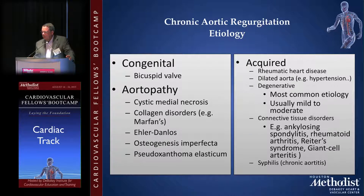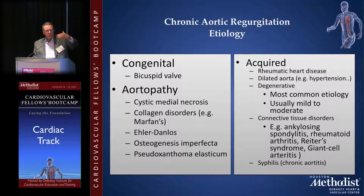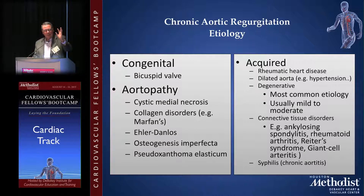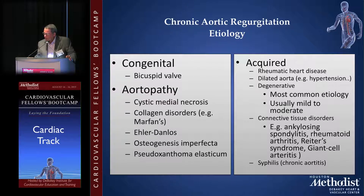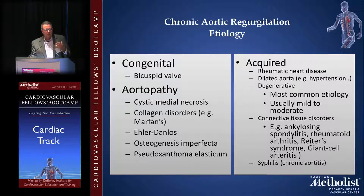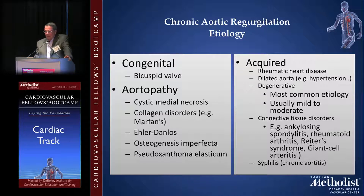Then you have all these diseases of the aorta that produce dilation of the annulus. When the annulus dilates, the leaflets do not touch each other very well and you get a regurgitant orifice — you have AI. But the disease is really at the level of the aortic annulus and aortic root. There's a whole list of them — diseases affecting the aortic root, stretching of the aortic valve, and therefore a regurgitant orifice.